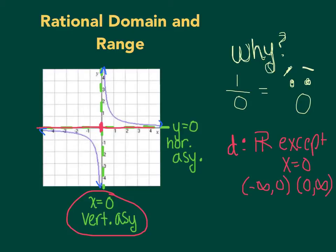So the range actually has a similar problem. If I look up and down, I can see also that this horizontal line is not included. So the range is actually exactly the same as the domain. They are both all real numbers except, in this case, it's y equals 0 because it's the range, whereas in the domain it was x equals 0.